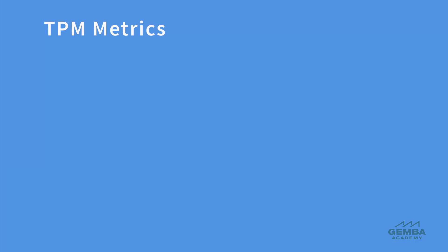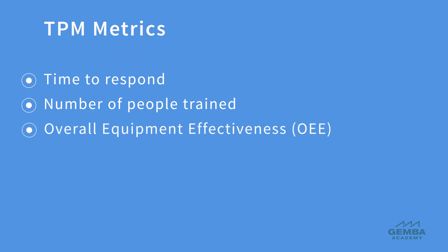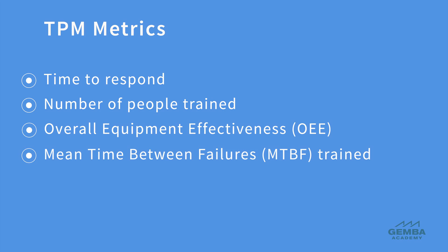Fortunately, in TPM, there is a specific set of metrics for measuring our progress. Some of these are common sense metrics that don't require formulas, such as the time to respond to a machine breakdown or the number of people trained to perform basic daily cleaning and inspection tasks. Other metrics, such as overall equipment effectiveness and mean time between failures, do require making observations, collecting data, and performing simple calculations.